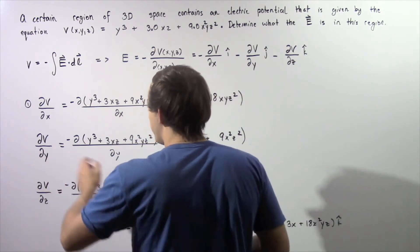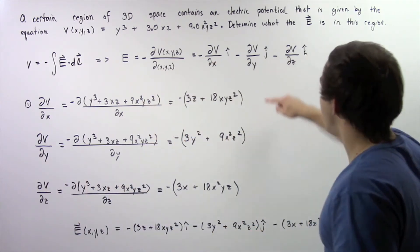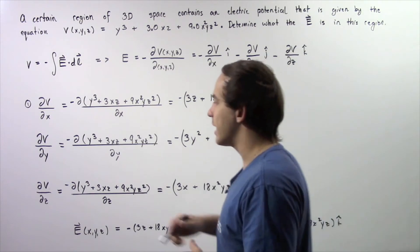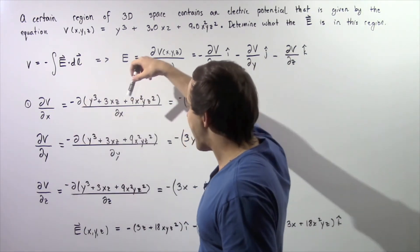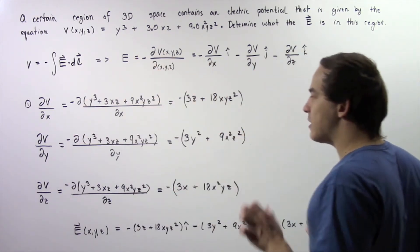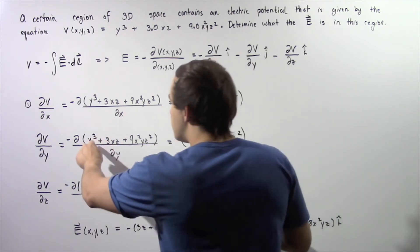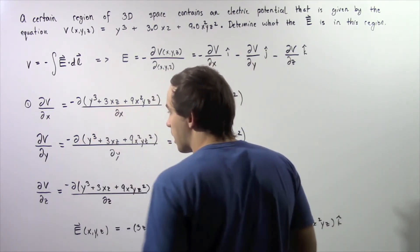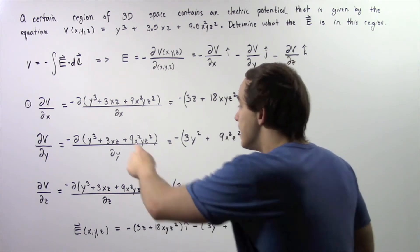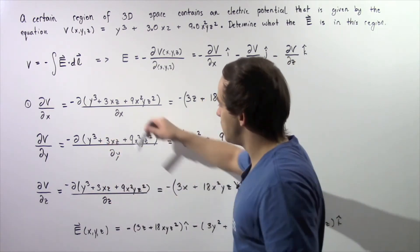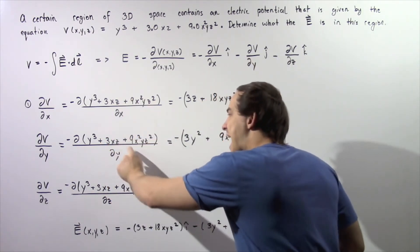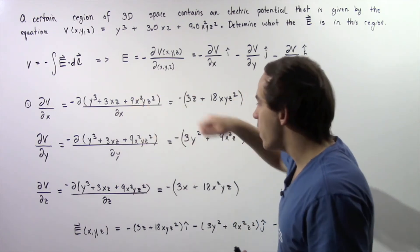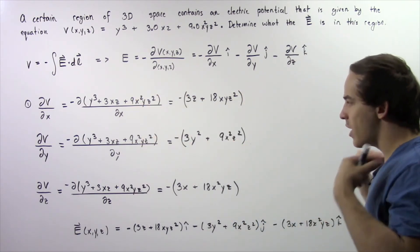Now in the second step, we calculate the partial derivative of the voltage with respect to y, holding x and z as constants. The y-cubed term has a y so it becomes 3y². The 3xz term has no y so it becomes zero, and the 9x²yz² term has a y so it becomes 9x² times z².